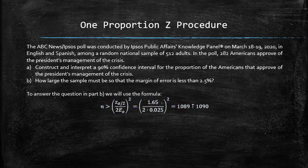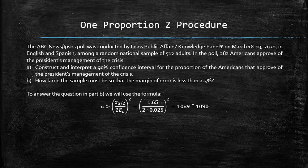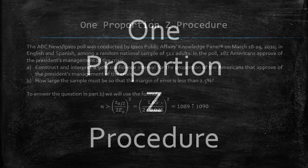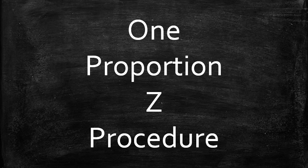1090 is the smallest sample size for which the margin of error will be less than 2.5% for a 90% confidence interval. I just showed how to apply the one proportion Z procedure to construct a confidence interval with a certain level of confidence, and how to determine the sample size to achieve a certain level of accuracy.